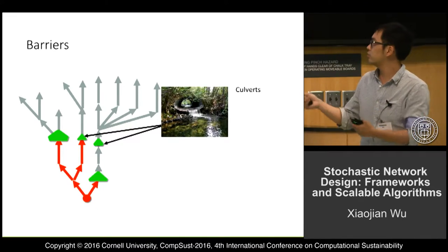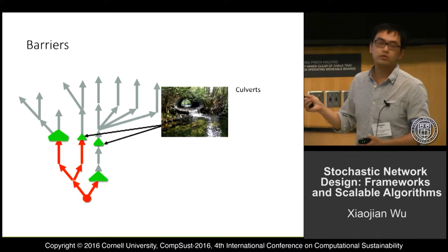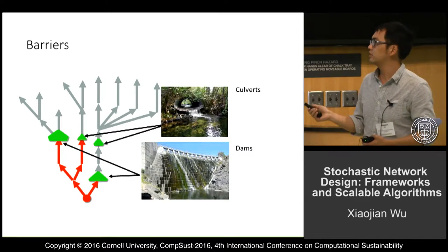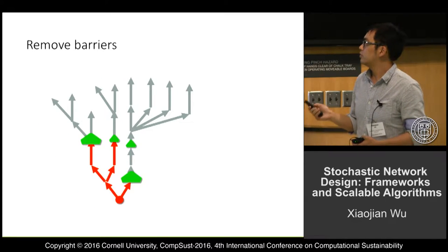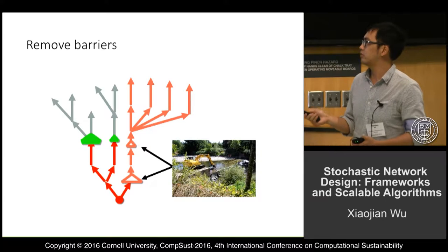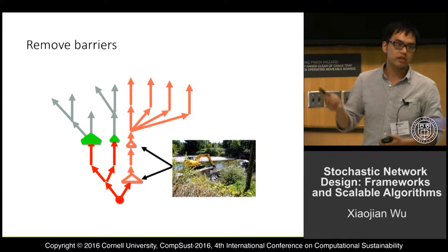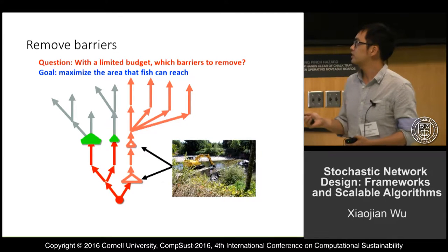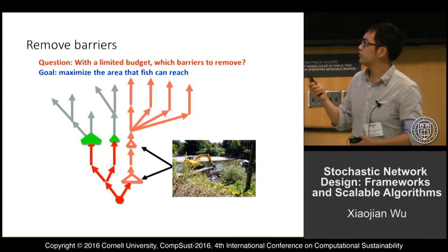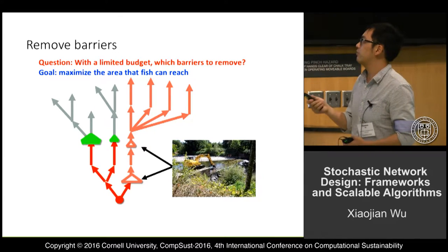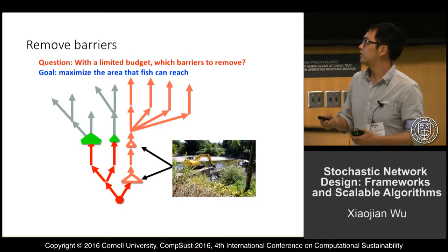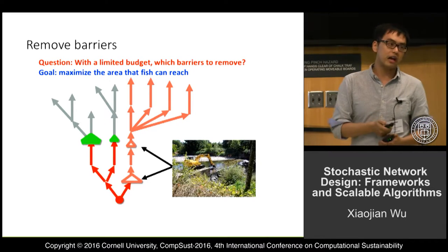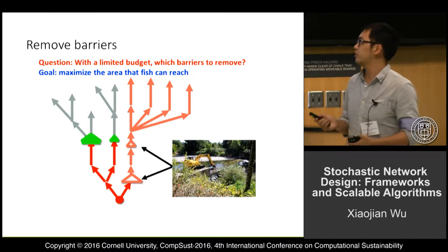In this work, we consider both covers and some dams. We can remove some of the barriers so fish can reach their habitats. The question is: given a limited budget, which barrier should we remove? The goal is to maximize the area that the fish can reach.